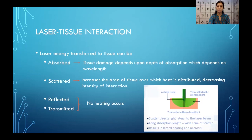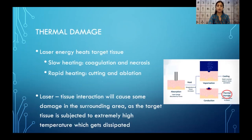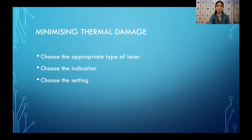Lasers with longer absorption length have a wider zone of scatter. When laser energy reaches the target tissue, slow heating causes coagulation and necrosis, while rapid heating causes cutting and ablation. The laser-tissue interaction will cause some damage to surrounding areas, as the target tissue is subjected to extremely high temperature which dissipates to surrounding non-intended areas as well.